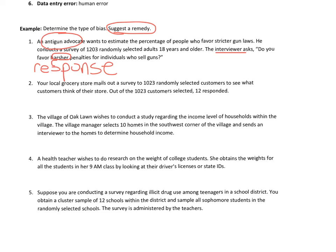Number two: your local grocery store mails out a survey to 1,023 customers to see what they think of their store. Out of that many, only 12 respond. That's definitely non-response bias. The suggested remedy: offer incentives.